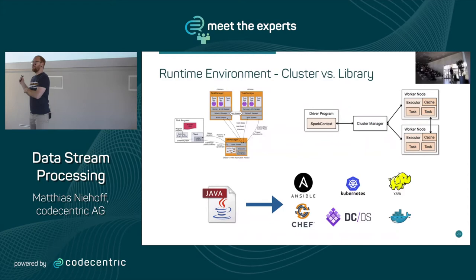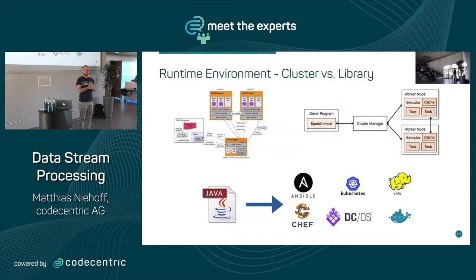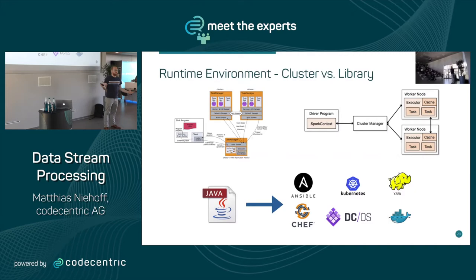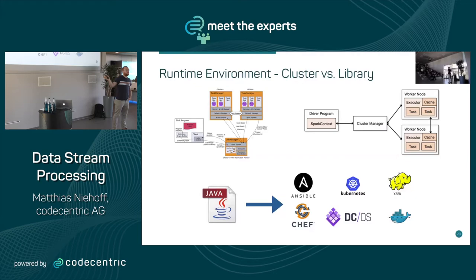The lightweight library approach sounds great, but it only works because all the hard tasks are done somewhere else — partitioning and scaling, for instance. If you use Kubernetes, Kubernetes handles it. If you use Kafka Streams, Kafka does the hard work. The partitioning, ordering, and scaling that a cluster manager handles are instead handled by Kafka, which is fine — why do it again if Kafka already does it?